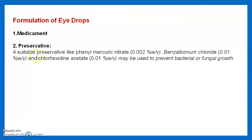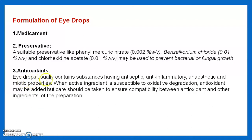Formulation components include medicament and preservatives. Suitable preservatives include phenyl mercuric nitrate at 0.002% w/v, benzalkonium chloride at 0.1% w/v, and chlorhexidine acetate at 0.01% w/v, used to prevent bacterial or fungal growth. Antioxidants may be added when an active ingredient is susceptible to oxidative degradation, but care must be taken to ensure compatibility between the antioxidant and other ingredients.